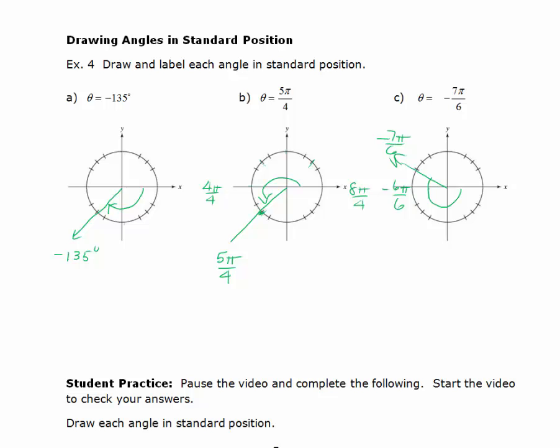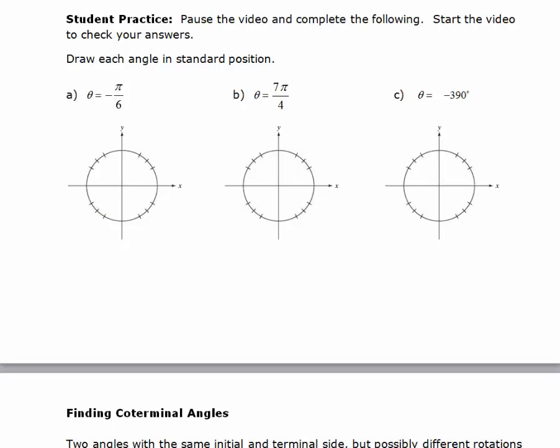I'd like you to pause the video and try to draw a few angles on your own and then start the video up to check your work. For this first angle, negative pi over 6, I need to just move in a clockwise direction pi over 6 units, which would bring me right to this right here. So this would be negative pi over 6.